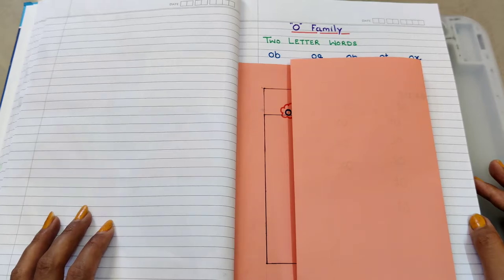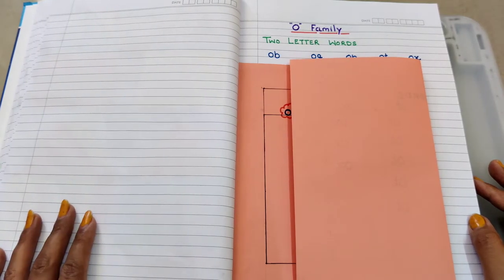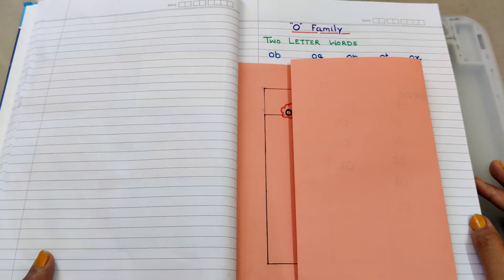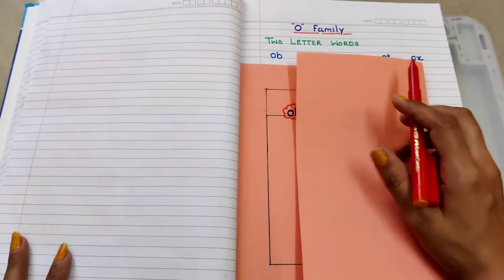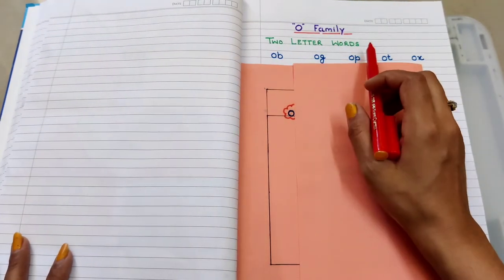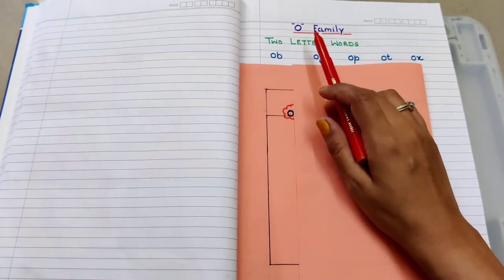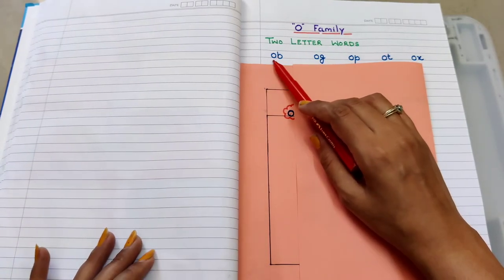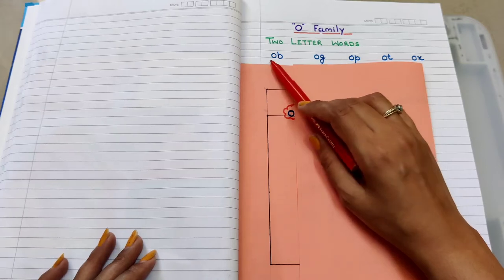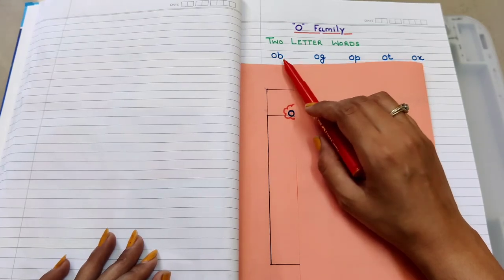If you're new to the channel, please subscribe for kids learning content as well as kids study material reviews. After phonics, we introduce children to two-letter word blending. This is how we'll introduce O family words to children - together with two-letter words.